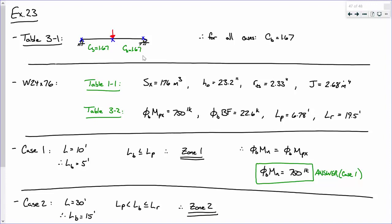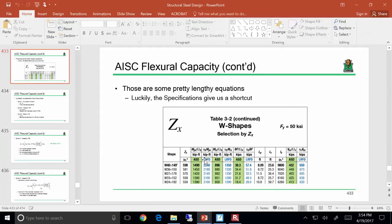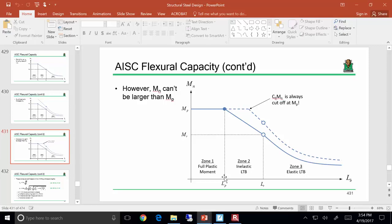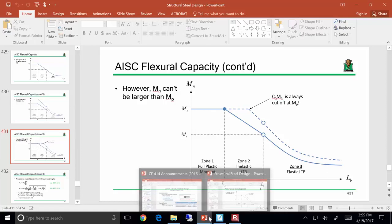Okay. So, case one. Case one's pretty simple. We have a beam that's 10 foot long, so its unbraced length is 5 feet. So, since the unbraced length is less than L_P, that puts us in zone one of the curve. Let me pull the curve up. So, here's our curve. L sub P is about 6.7 something. Yeah, 6.78. And L sub B is 5 feet, so there's our capacity, M sub P. Very simple.